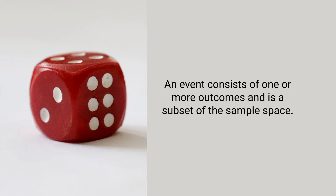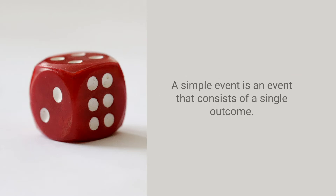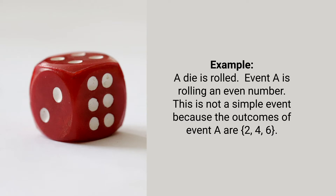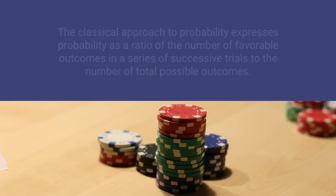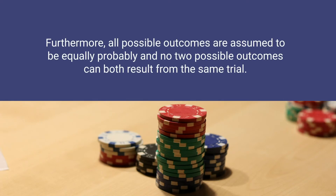A simple event is an event that consists of a single outcome. For example, a die is rolled and event A is rolling an even number — this is not a simple event because the outcomes of event A are 2, 4, and 6. The classical approach to probability expresses probability as a ratio of the number of favorable outcomes in a series of successive trials to the number of total possible outcomes. Furthermore, all possible outcomes are assumed to be equally probable, and no two possible outcomes can both result from the same trial.